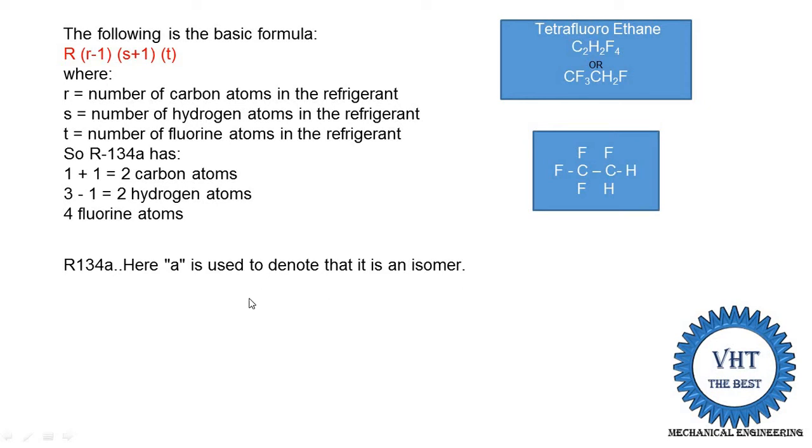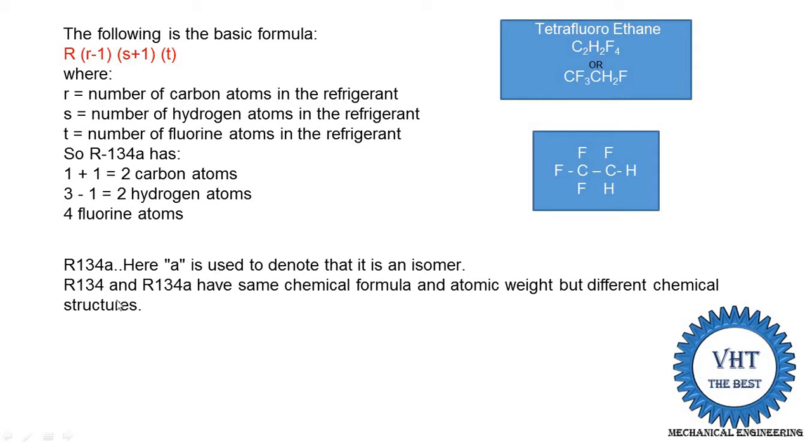What is an isomer? Isomers are compounds that have the same chemical formula and the same atomic weight, but different chemical structures. Both R134 and R134a have the formula C2H2F4, but their structures are different.